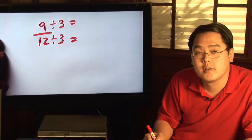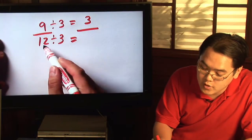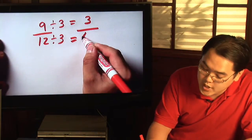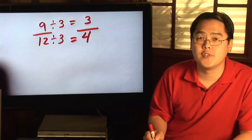Because 9 divided by 3 is 3 and 12 divided by 3 is 4, 9 twelfths reduces to 3 quarters.